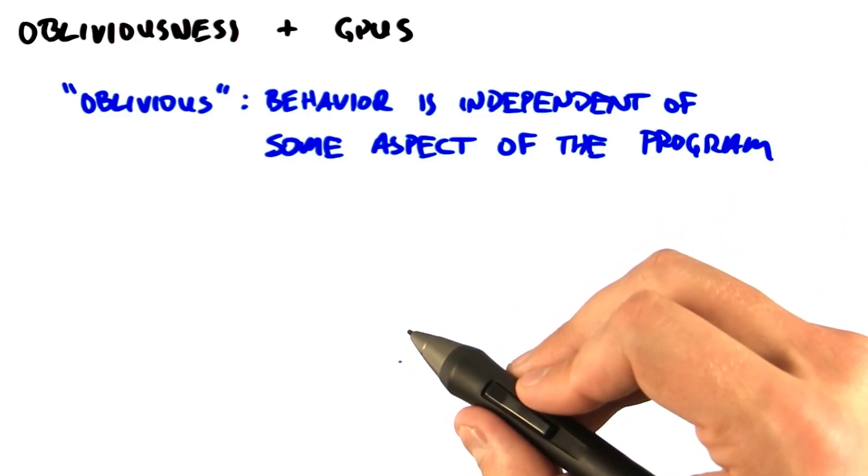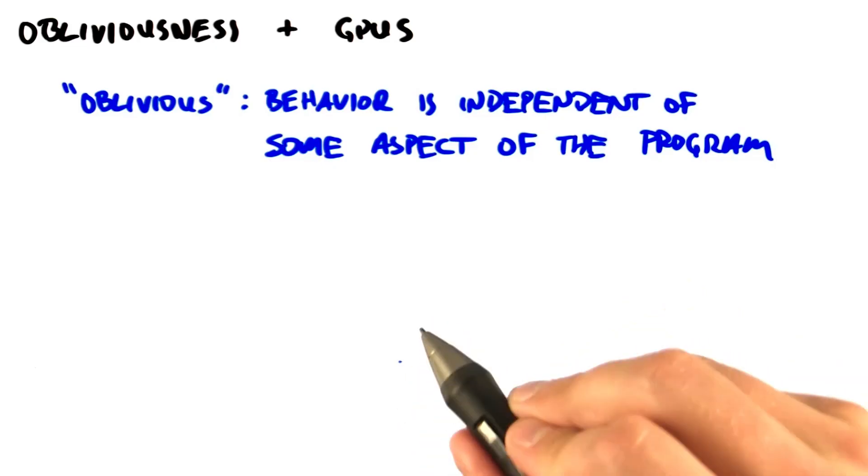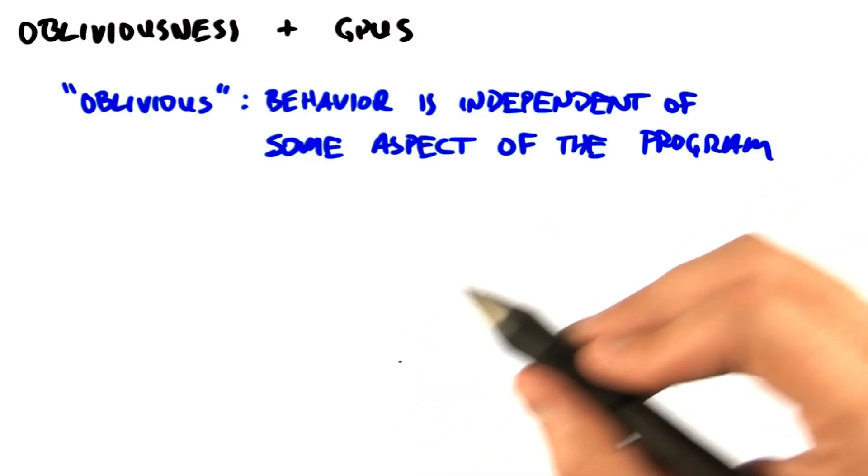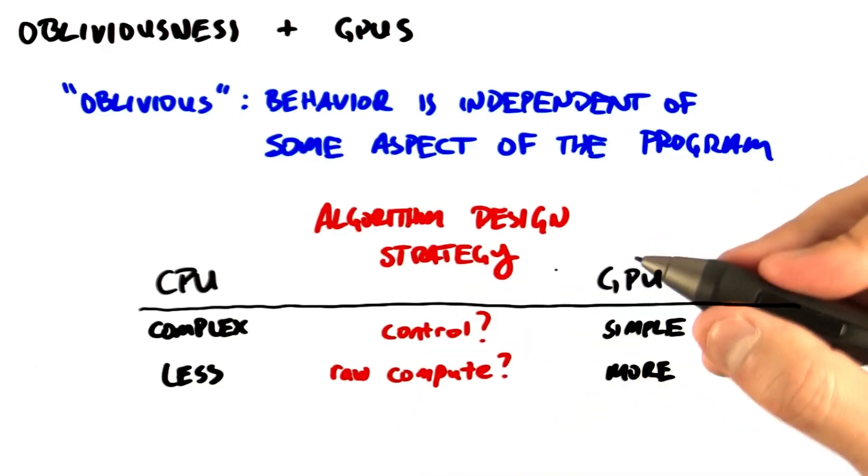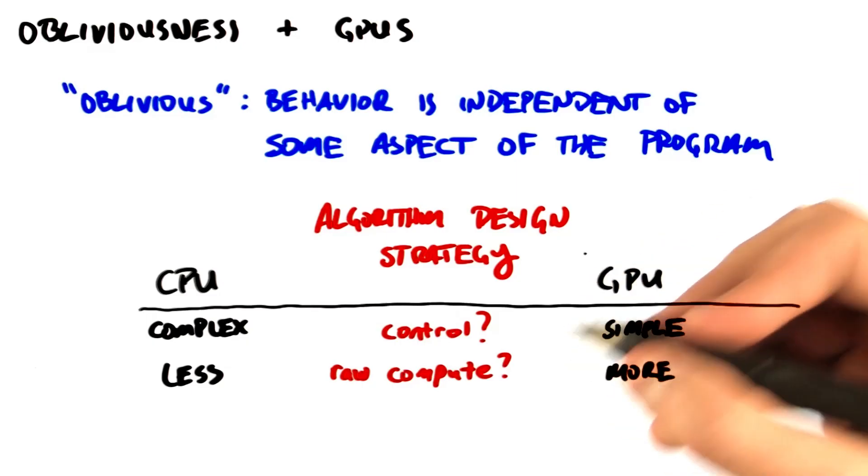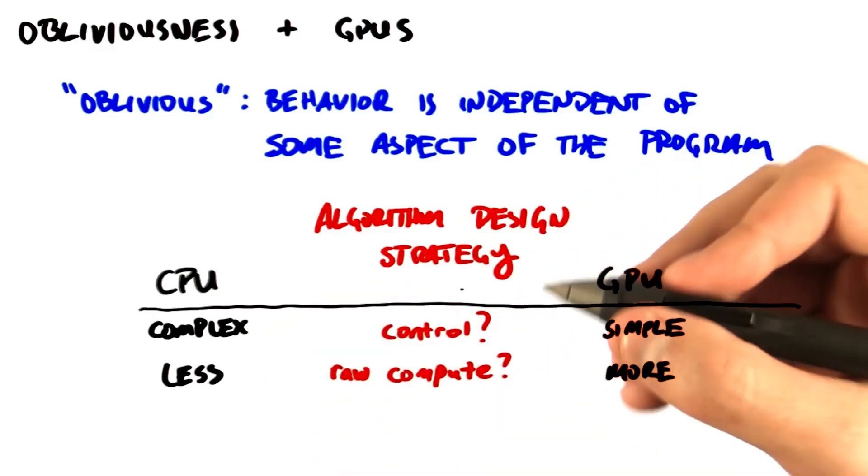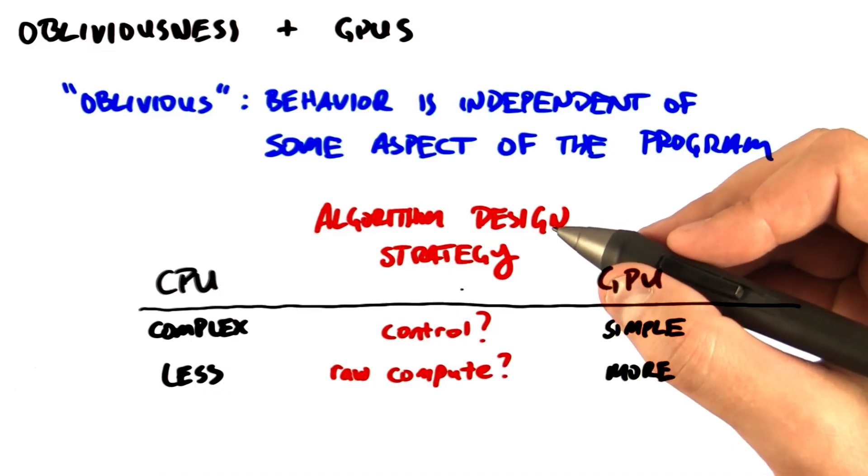In this case, we're talking about a sorting algorithm that always does the exact same steps, no matter what the input is. Good CPU sorting algorithms are generally more clever. They have more complex control flow and a lot of data dependent decisions to run fast.